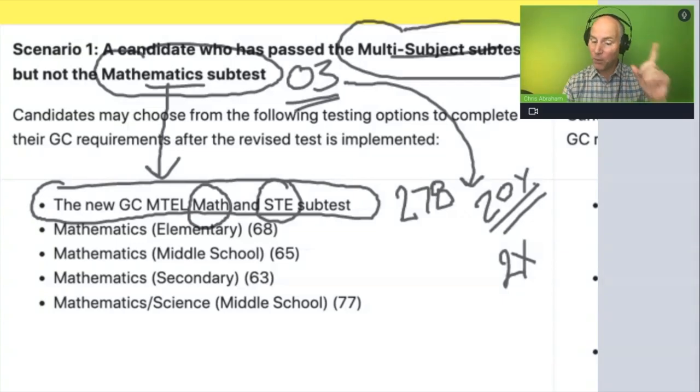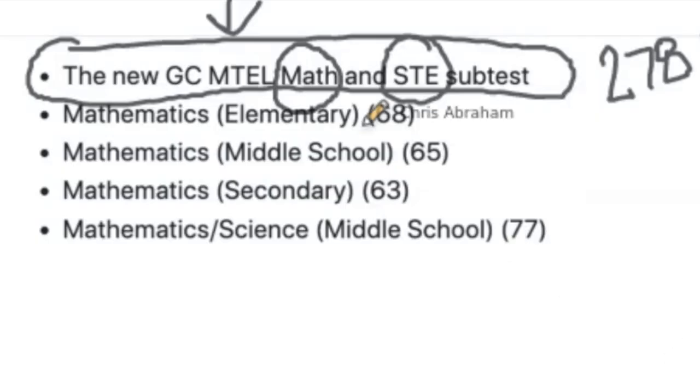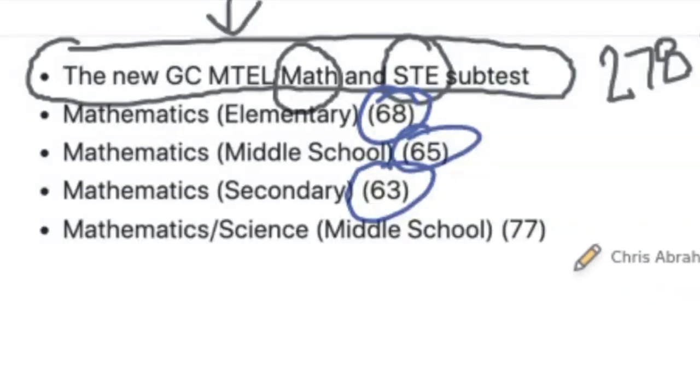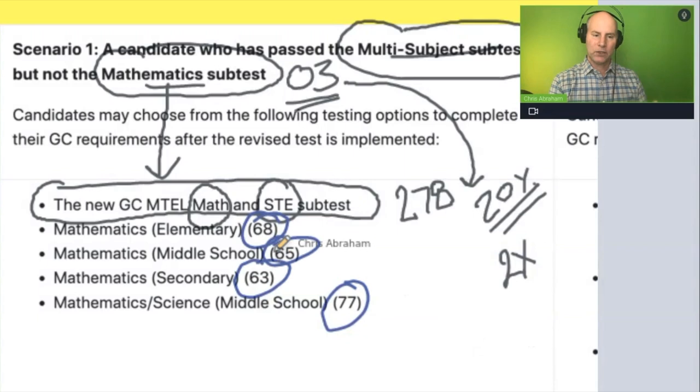Now, some teachers say, well, wait a second. Why don't I take the 68 or 65 or 63? It says I can take these or the 77. Well, here's the thing.